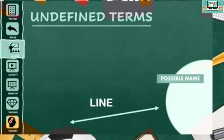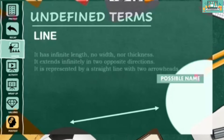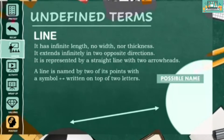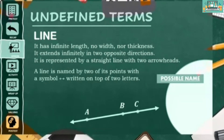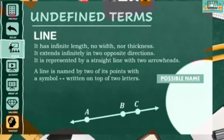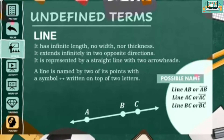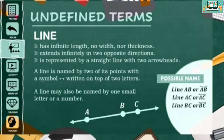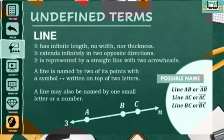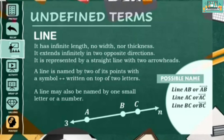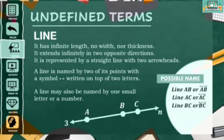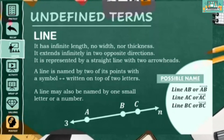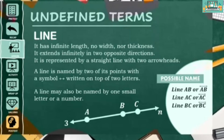The second undefined term is the line. It has infinite length but with no width nor thickness. It extends infinitely in two opposite directions, which is why it is represented by a straight line with two arrowheads. We can name a line using two of its points with a line symbol on top of the two letters. For example, we can name this one as line AB, line AC, or line BC. We can also use a small letter or a number in naming a line, such as line N or line 3.